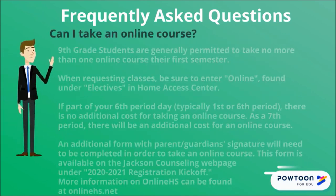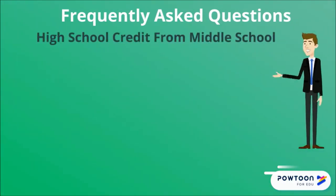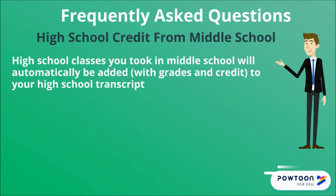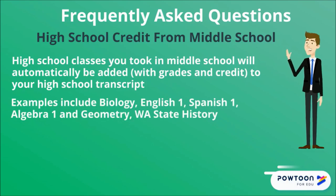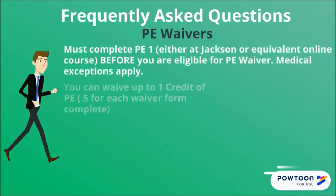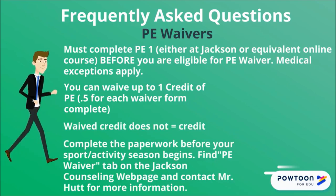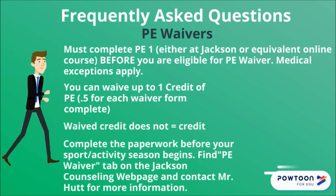Can I take an online course? Freshmen are generally limited to one online course each semester. With part of your six-period day, this course will be at no extra charge. To take a course online, please be sure to enter online as an additional course when requesting classes and complete the additional form with parent and guardian signature found on the Jackson Counseling webpage. Took a high school class in middle school? These courses along with the grades and credit will automatically be added to your transcript when you start high school. You can remove them by semester by completing paperwork with your parent or guardian signature by the end of your junior year — all changes are final and can only be done once. You can also find information on waiving up to one credit of PE on the Jackson website; waiving credit does not earn credit and you must complete the paperwork before your sport or activity season begins. Contact Mr. Hutt if you have any questions.